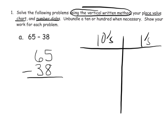So let's use logic. We look at the ones column: we have five ones, and we need to take away eight ones. Can we do that? Do we have enough ones to take away eight? The answer is no, we don't have enough.